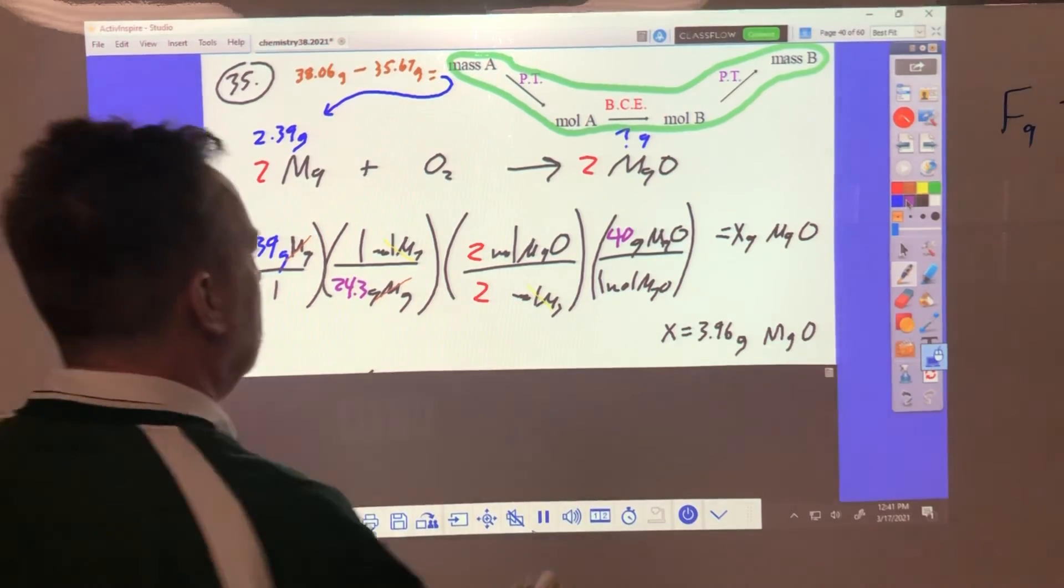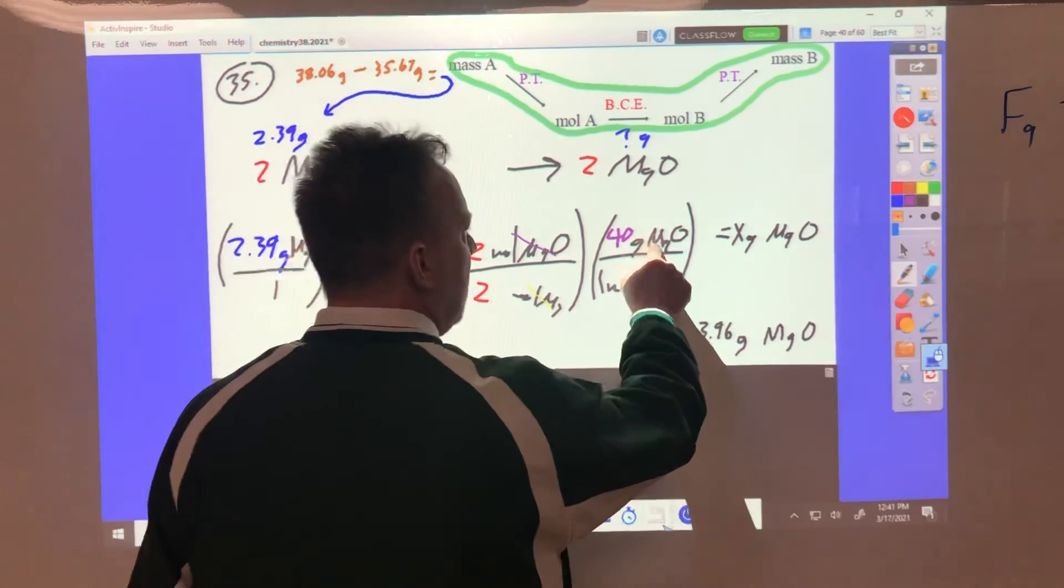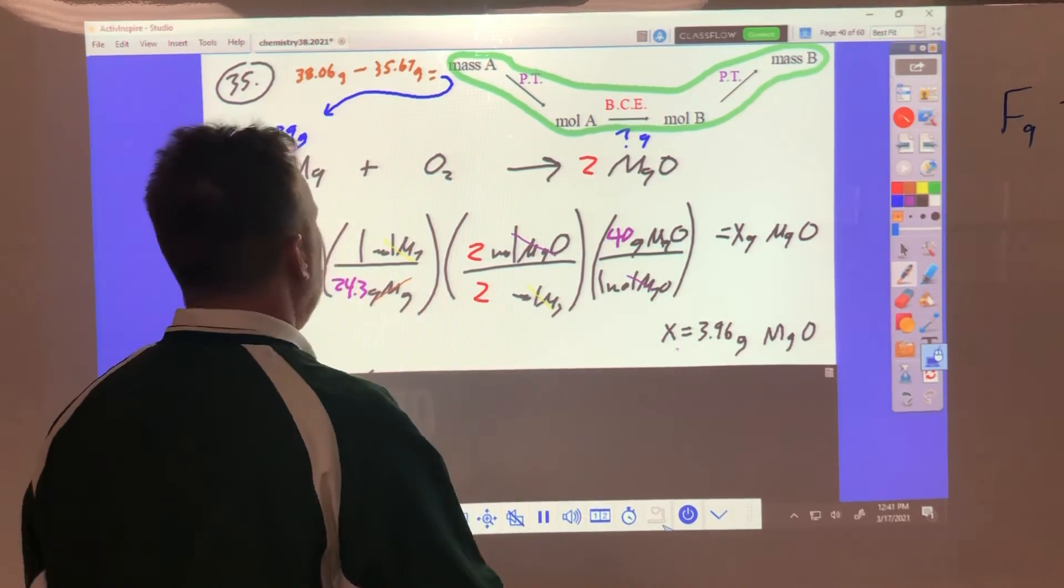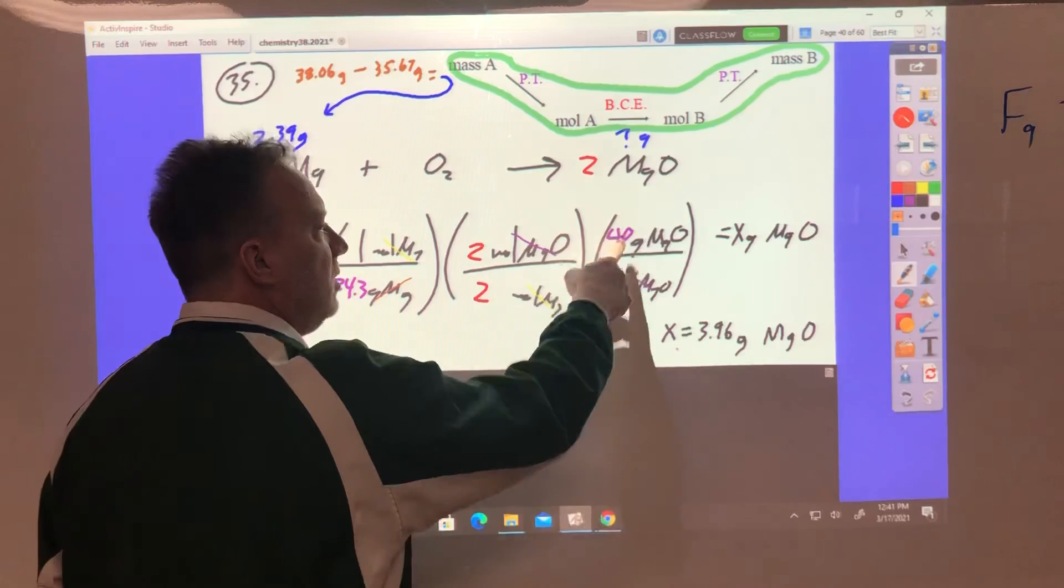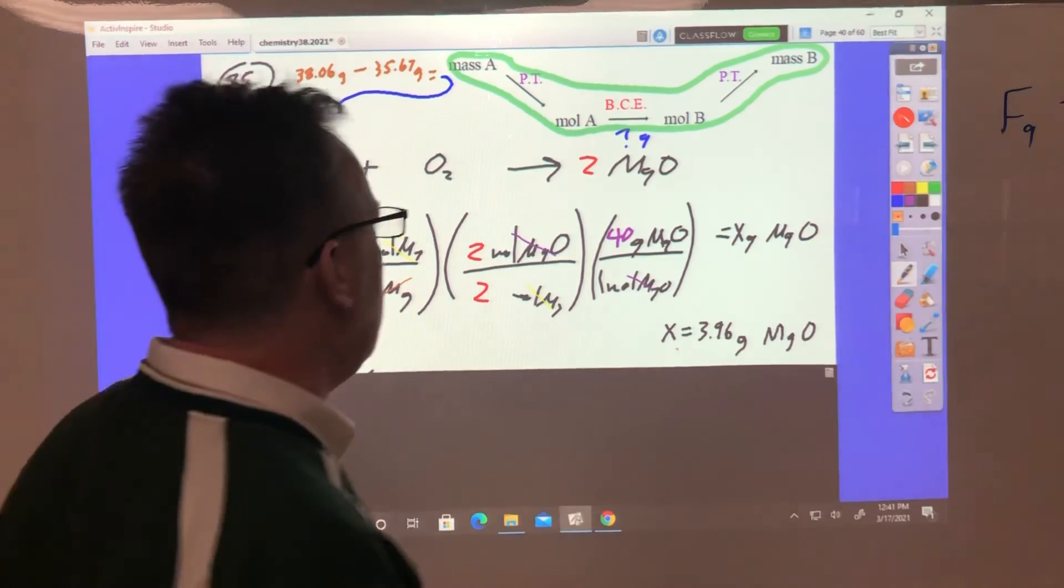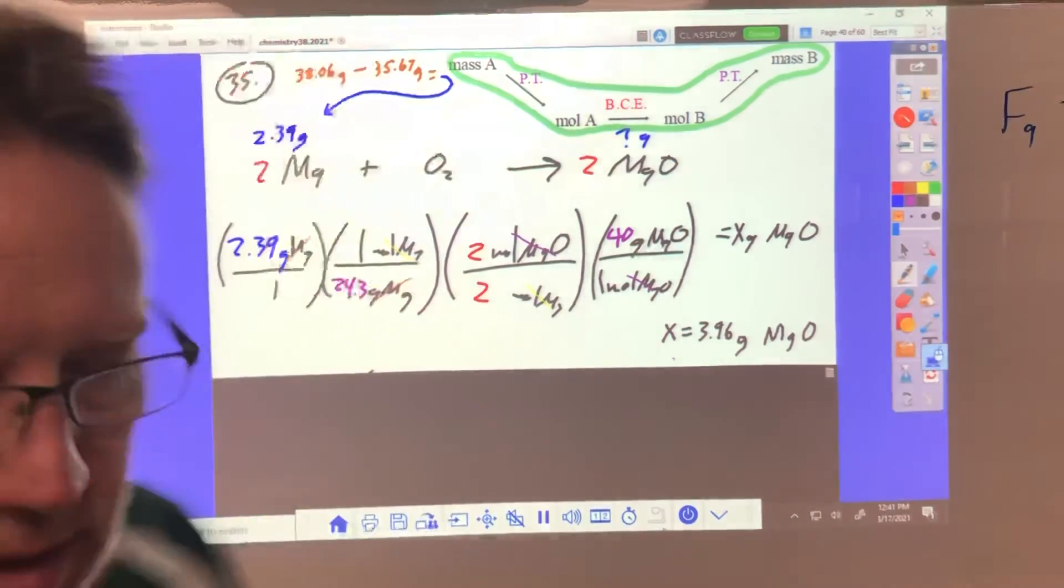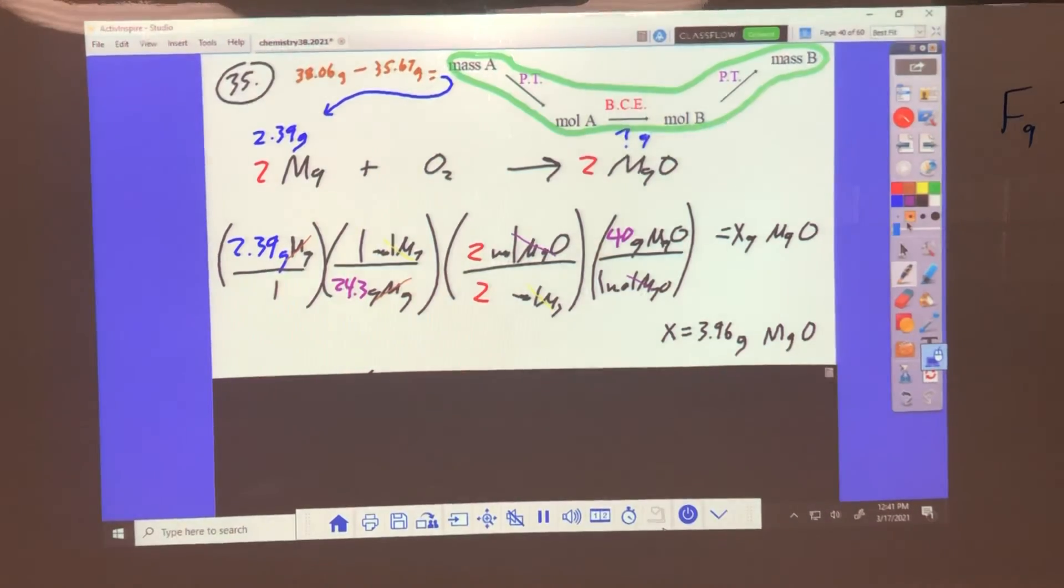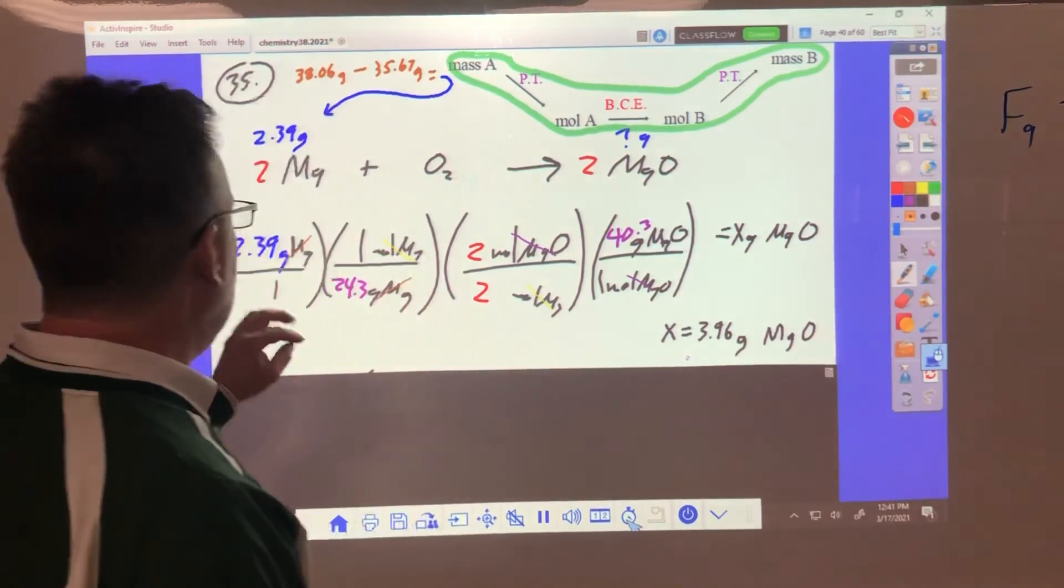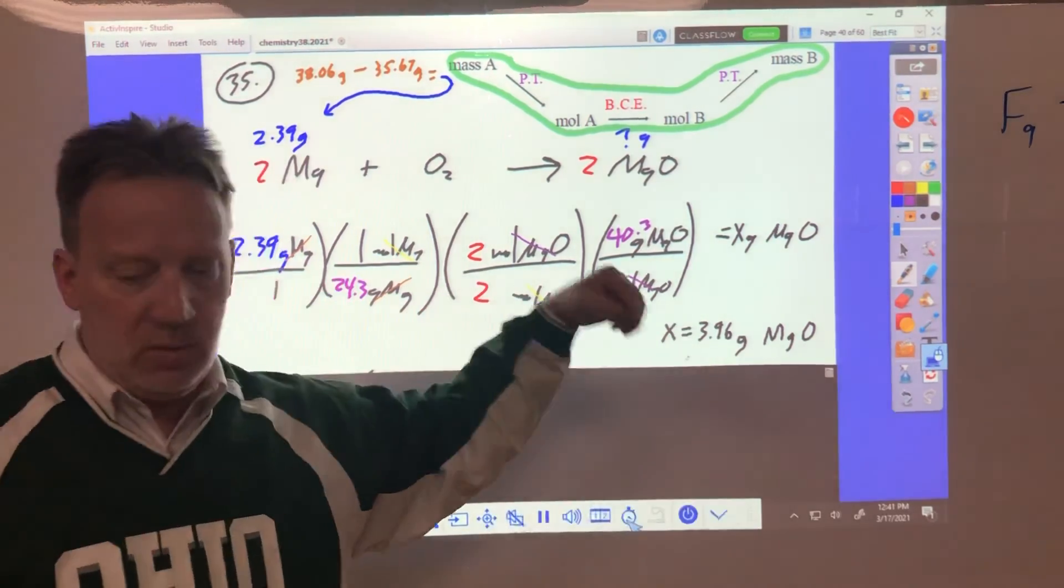Grams of magnesium cancels, moles magnesium cancels, moles MgO cancels. 24.3 plus 16 is about 40 grams for MgO. Magnesium is 24.3, it's 24.3 plus 16, it'd be 40.3. It's not off very much. 40.3. Comes out to be 3.96. Now this we crunch the numbers to get, it is theoretical, so it goes over the bottom.